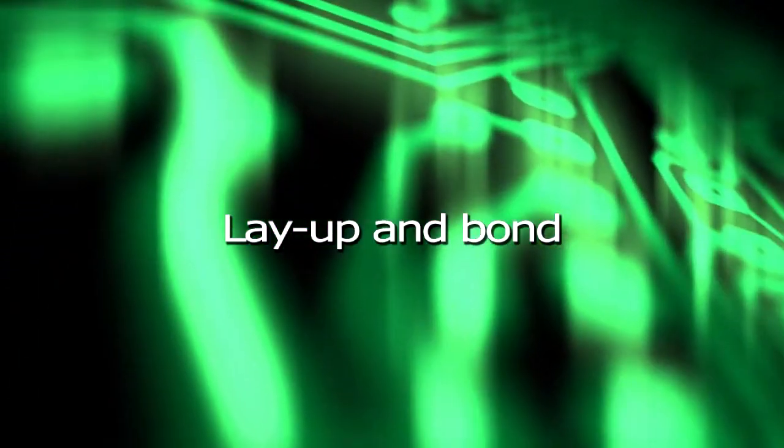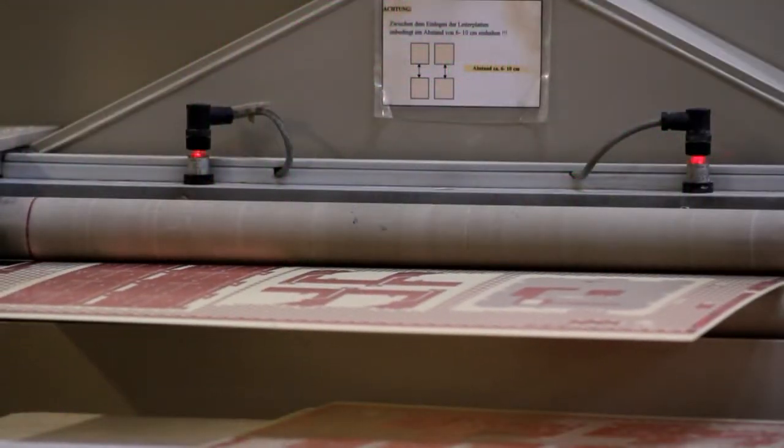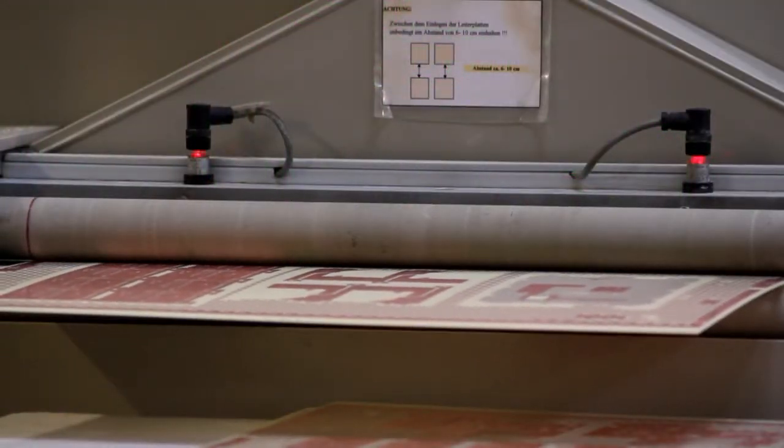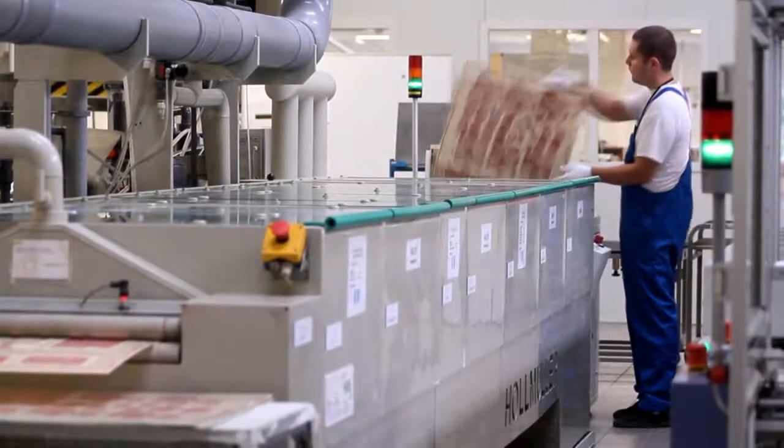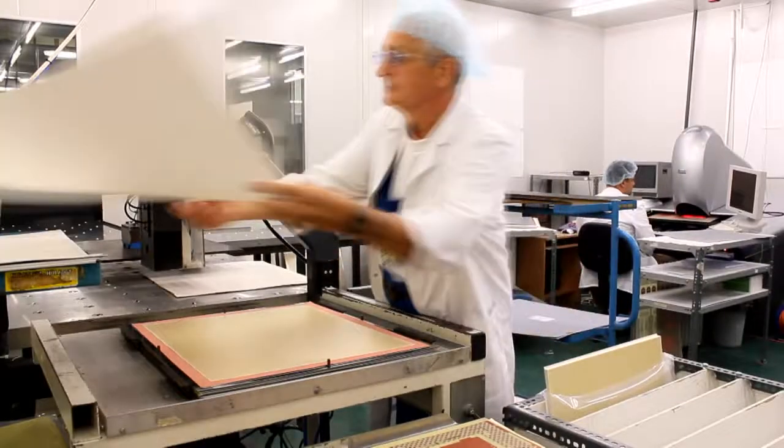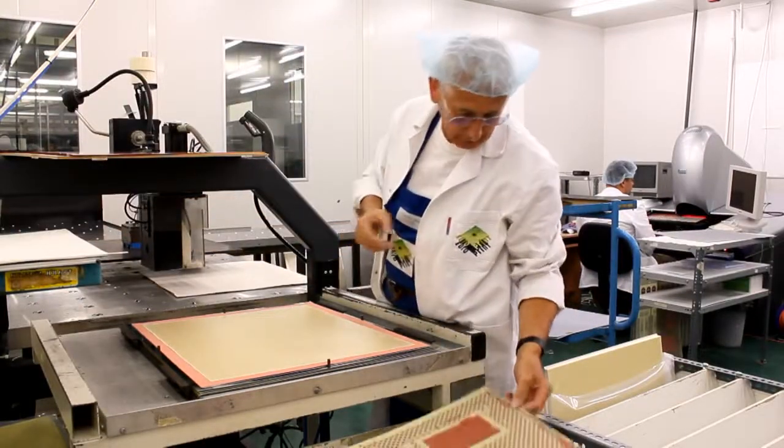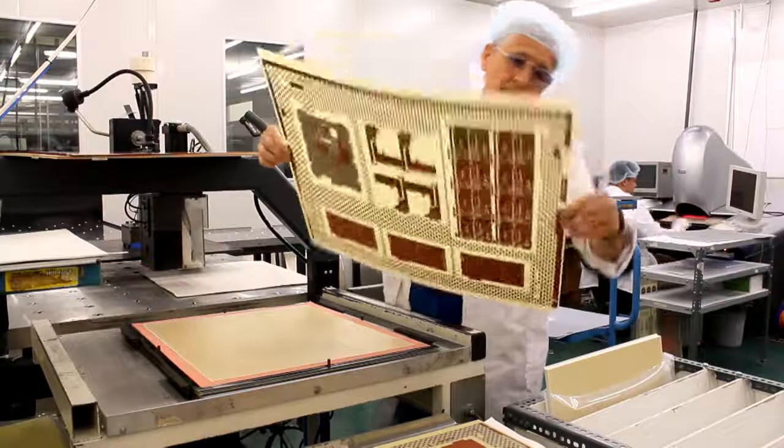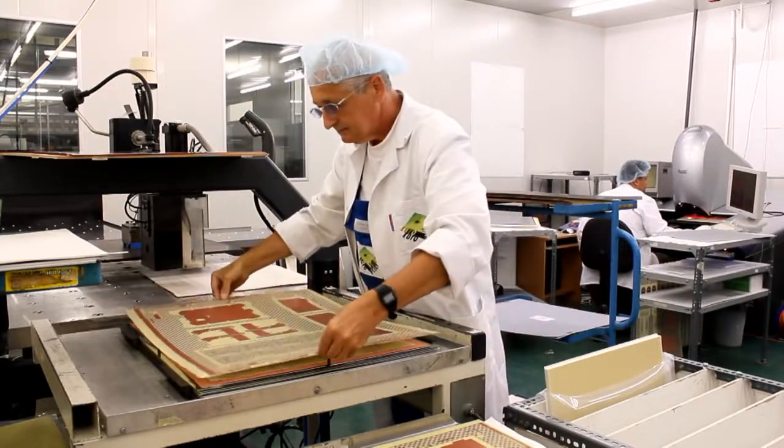Layup and bond. The outer layers of our multi-layer consist of sheets of glass cloth pre-impregnated with uncured epoxy resin or prepreg and a thin copper foil. The layup operator has already placed a copper foil and two sheets of prepreg on the heavy steel base plate.